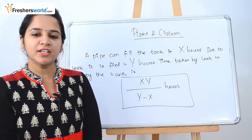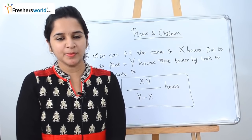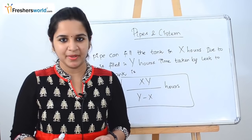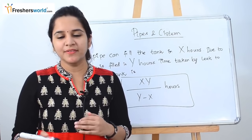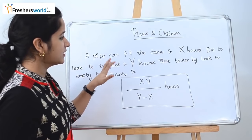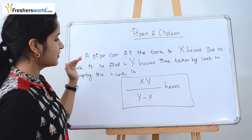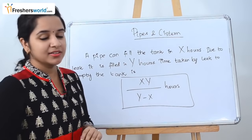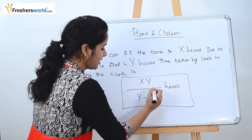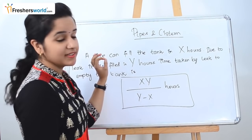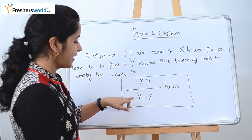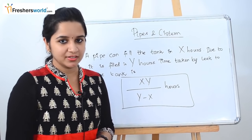The topic we are looking at now is Pipes and Cistern part 2. In part 1 we dealt with basic concepts and simple problems. Today we will cover two common types of problems from aptitude exams and show the easiest way to solve them. The first type: a pipe fills a tank in x hours; due to leakage it is filled in y hours. The formula for the time taken by the leak to empty the tank is xy divided by (y minus x) hours.